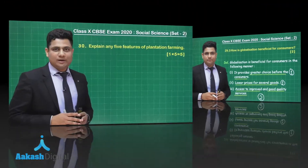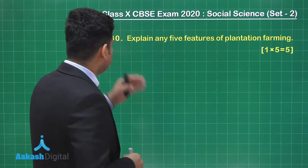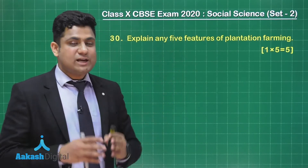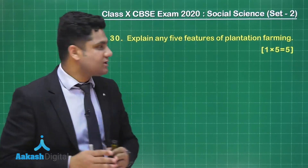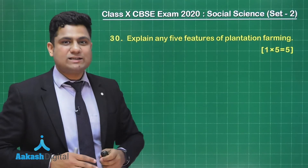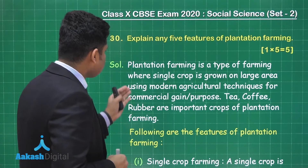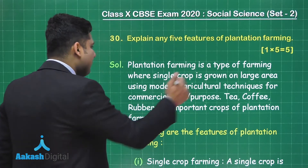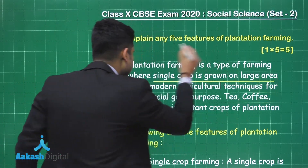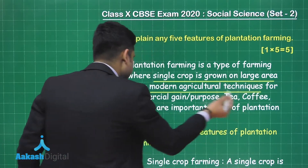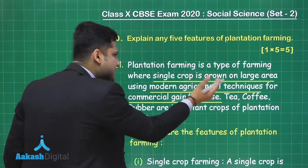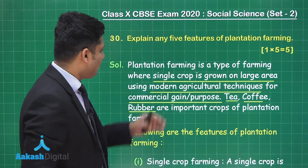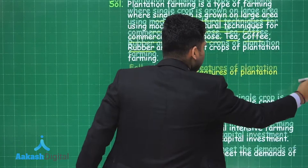Let's move to question number 30. It is asking: explain any five features of plantation farming. This question is directly from the chapter on agriculture. You need to first define plantation farming and then go for its features. Plantation farming is a type of farming where a single crop is grown on a large area of land. It is a form of capital-intensive farming using modern agricultural techniques for commercial gain. Examples of plantation farming are tea, coffee, and rubber.